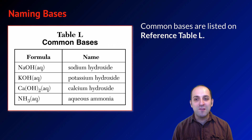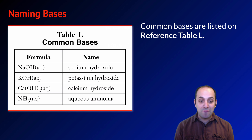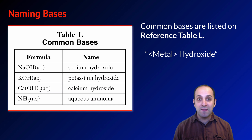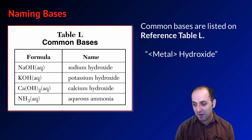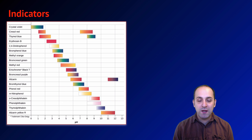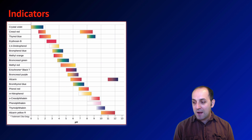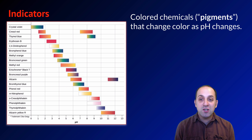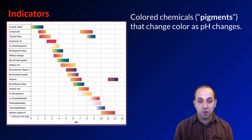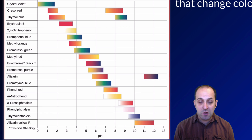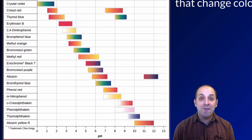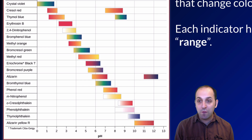In terms of naming bases, common bases are listed on Reference Table L. For Arrhenius bases, it's always the name of the metal followed by 'hydroxide' — sodium hydroxide, potassium hydroxide, calcium hydroxide. Now let's talk about how we can tell the difference between acids and bases. We use indicators — colored chemicals or pigments that change color as the pH of the solution changes. This diagram shows many different indicators over a range of pH values and the colors they produce.